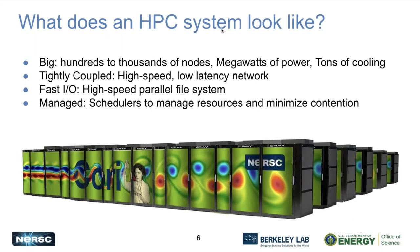What do they look like? Julian showed a picture of Summit. Here's a picture of the largest main production system at NERSC called Cori. These are physically large — something like Cori can be almost 70 cabinets, so it's multiple rows. These take up a lot of floor space in a data center, and they require a lot of power and a lot of cooling. So the infrastructure to run these is a pretty significant factor these days.